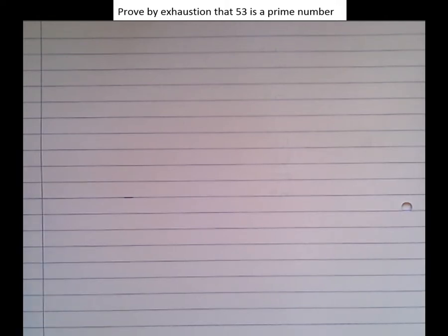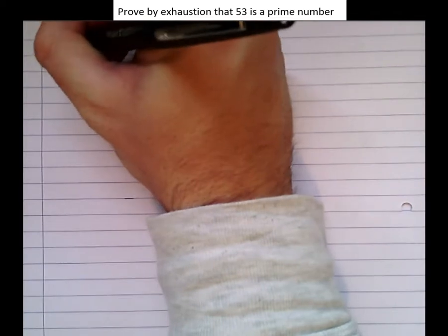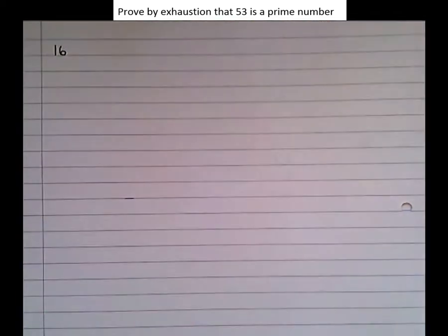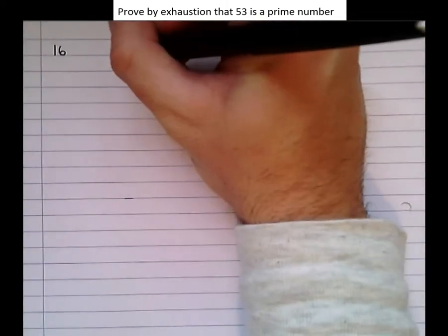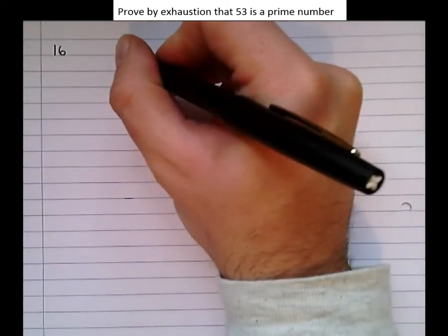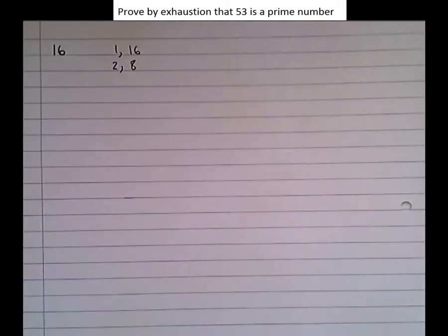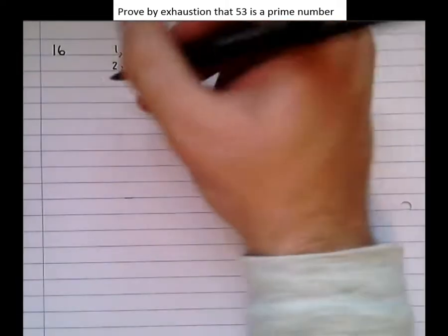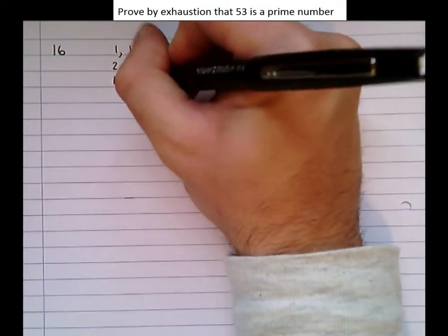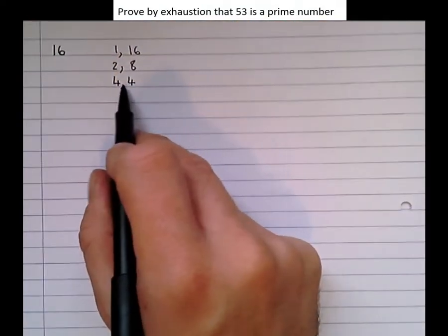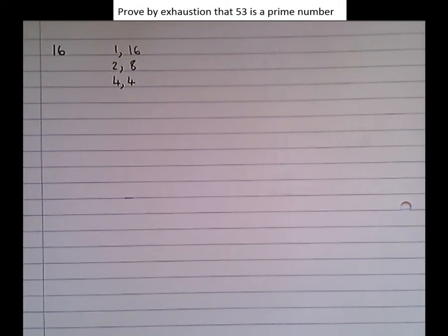Before we do that, let's take the number 16 and make an exhaustive list of all the factors. We've got 1 times 16, 2 times 8. We're doing them in order. 3 isn't a factor, and we've got 4 times 4. We've seen a repetition, so we know we're done.